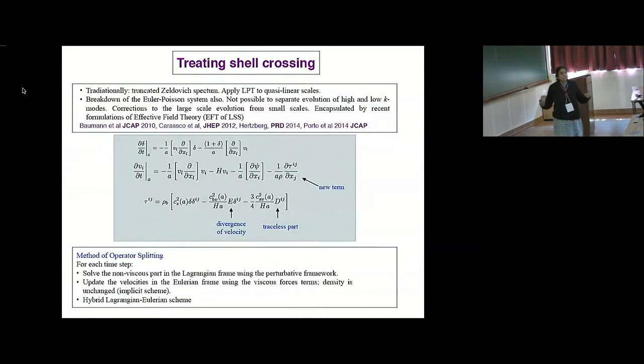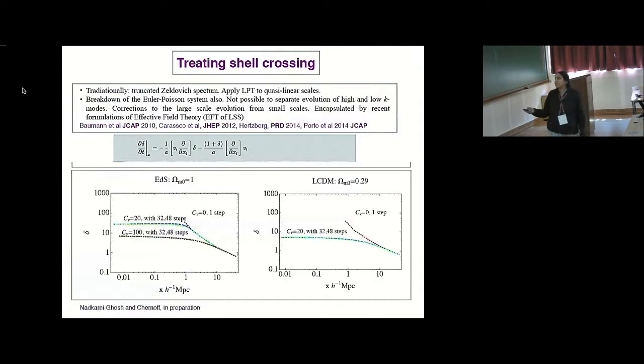The density stays unchanged; you just do a velocity update. And so this turns out to be a hybrid Eulerian-Lagrangian scheme. It's no longer just an LPT scheme, but you can do this sequentially. You take one step in LPT, update in the Lagrangian frame, re-initialize your conditions, and take another LPT step, and then again an Eulerian step, and so on.